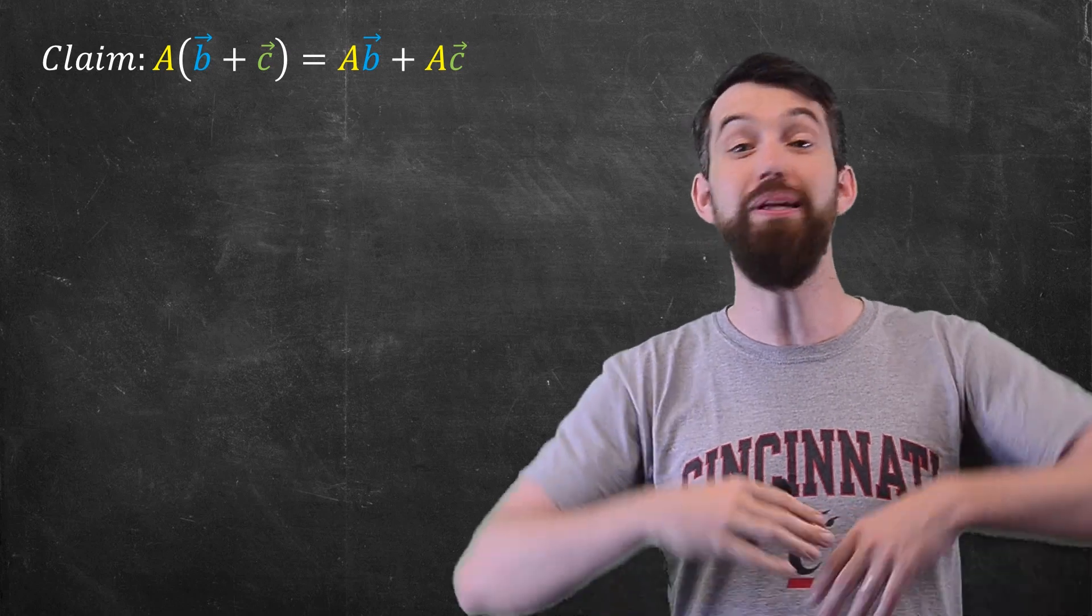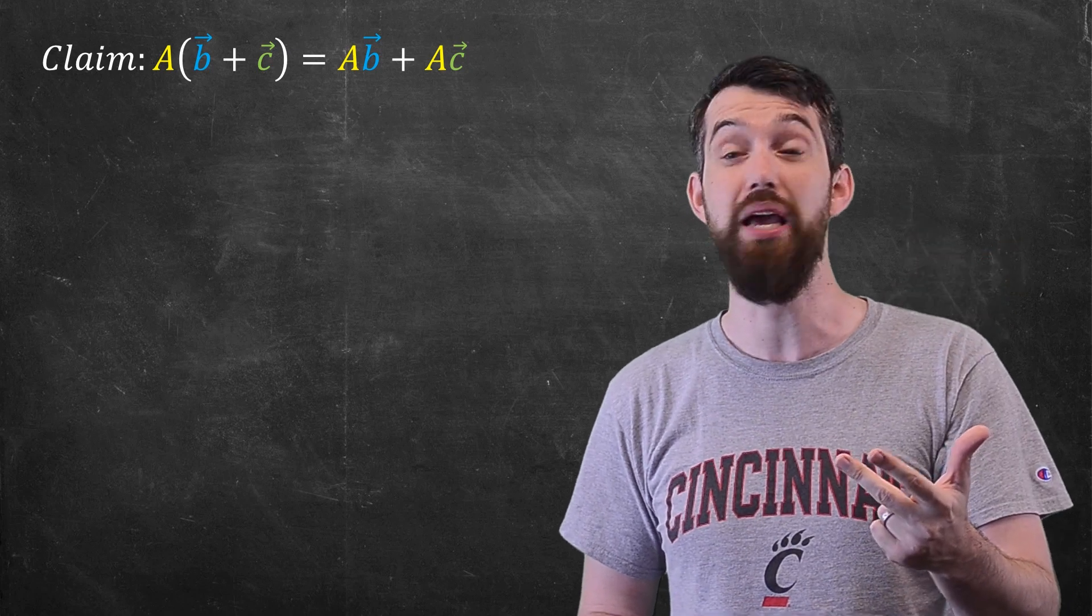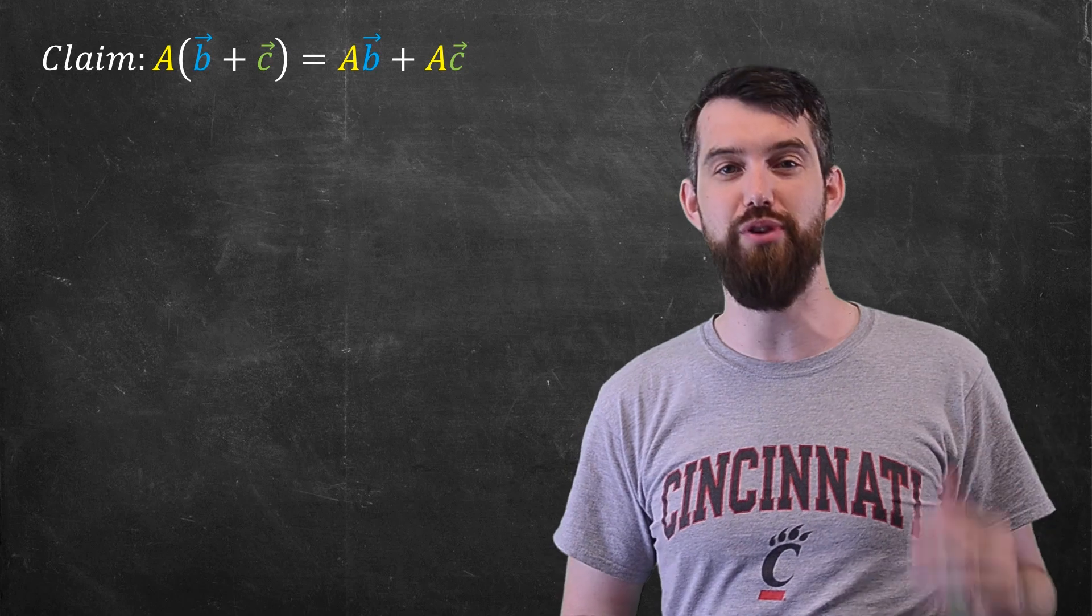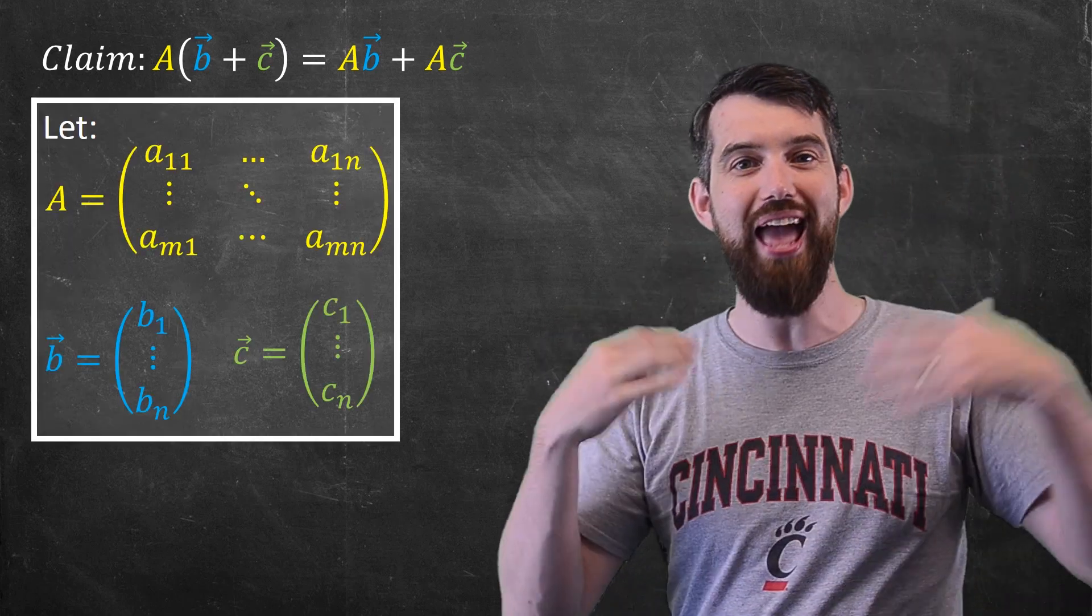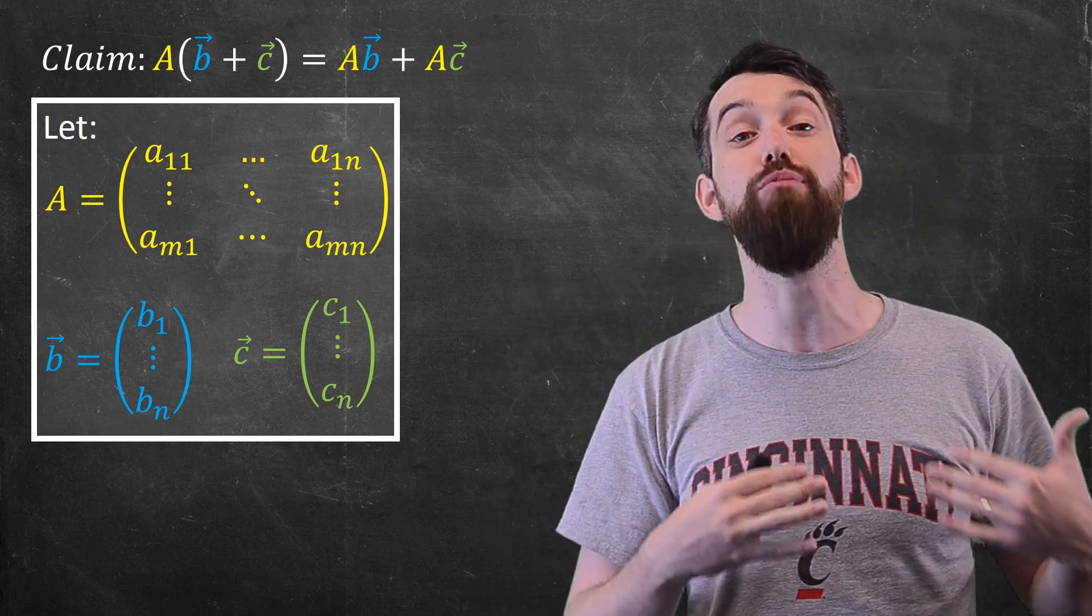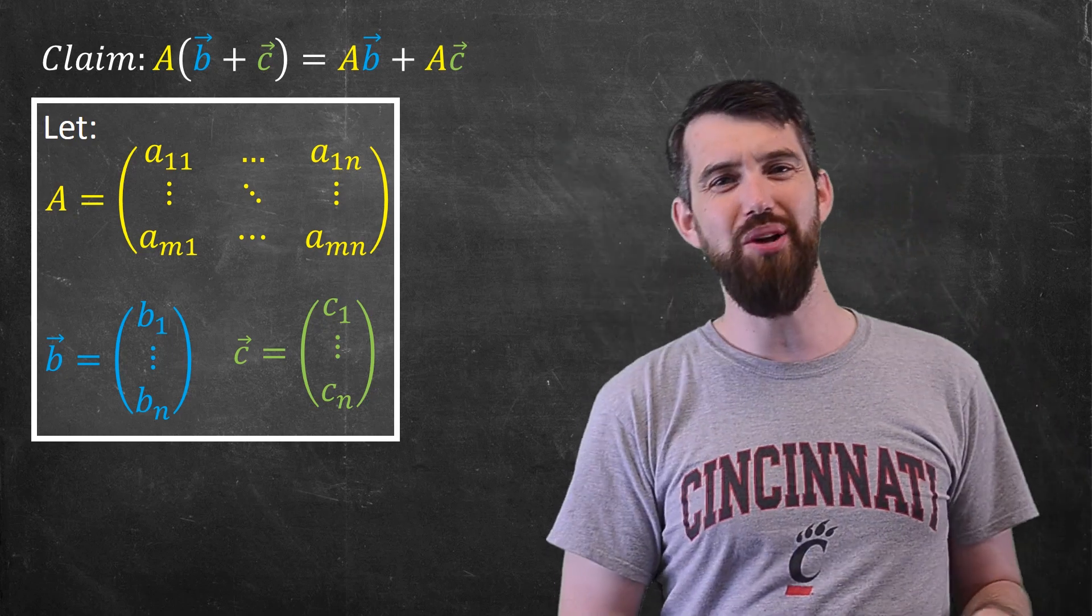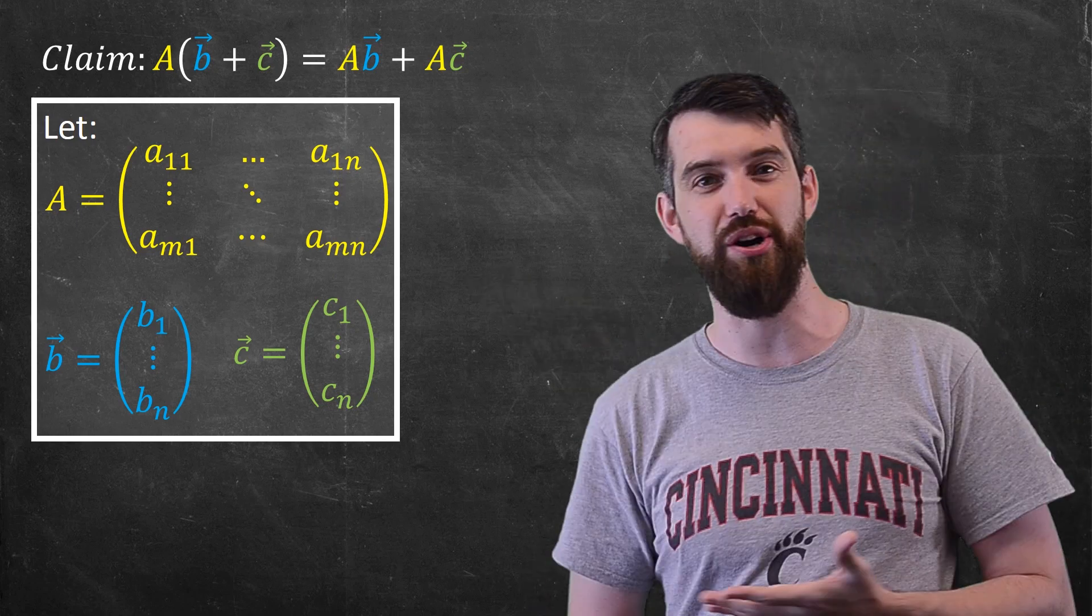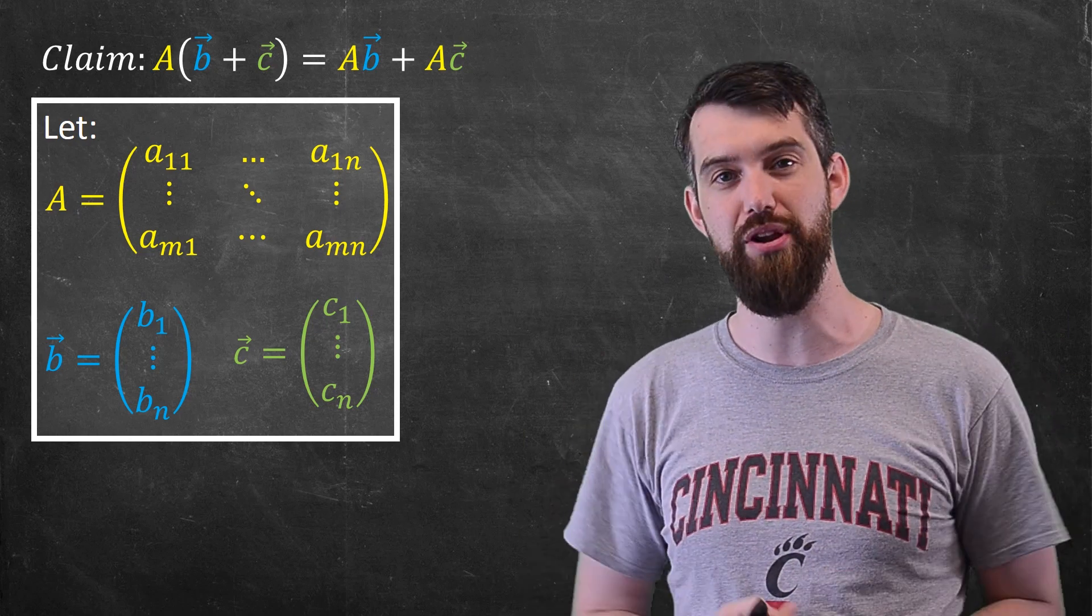Now, we want to prove this in complete generality, so that no matter what your A matrix is, and no matter what your B and C vectors are going to be, that this property is going to be true. So the first step is you have to use arbitrary notation. So what I'm going to do here is write my A matrix in terms of a_ij notation. This is the generic m by n matrix with m rows and n columns. And then the matrix vector product is only even defined if you have some alignment between the sizes. So the B and C vectors both have to have n different components to be able to align with this m by n matrix.